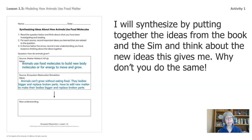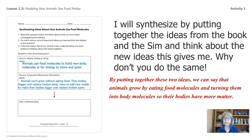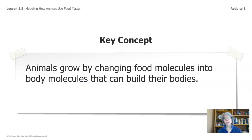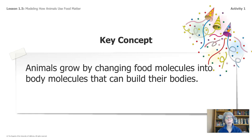Now I'm going to take these two ideas and synthesize them together to create a new idea — you can pause the video and do the same yourself. By putting these two ideas together, we can say that animals grow by eating food molecules and turning them into body molecules, so their bodies have more matter. Because what we have just landed on is a key concept — woohoo! Animals grow by changing food molecules into body molecules that can build their bodies. We built this idea slowly over time so that when we arrive at it, we are really firm with this idea.